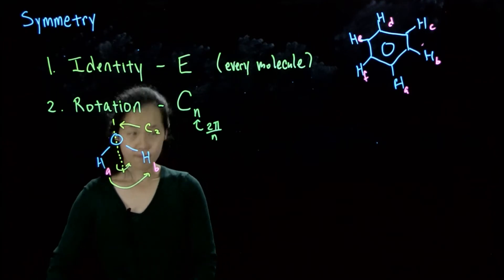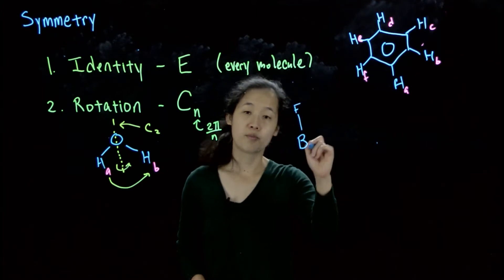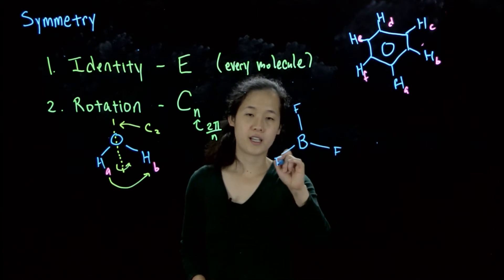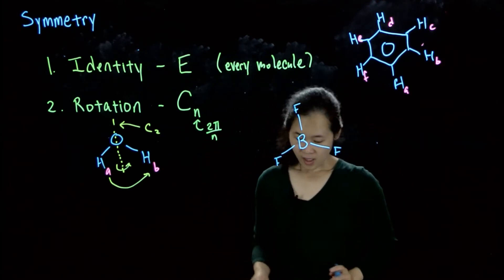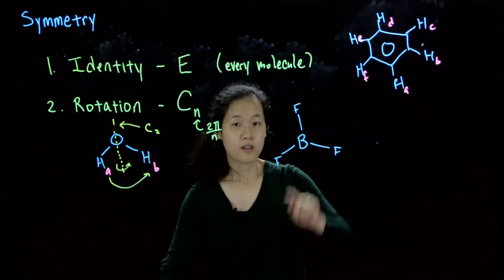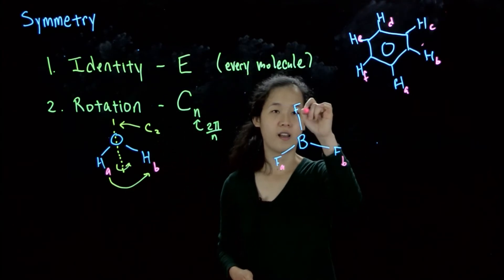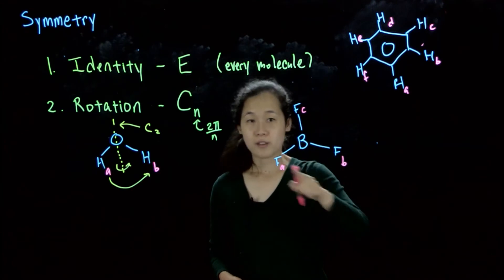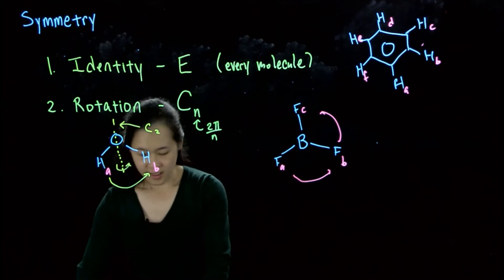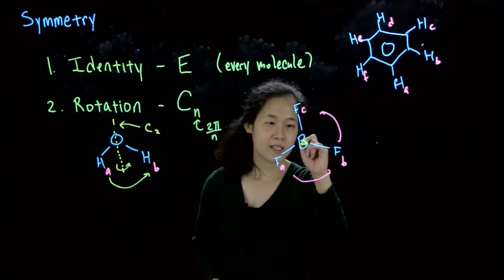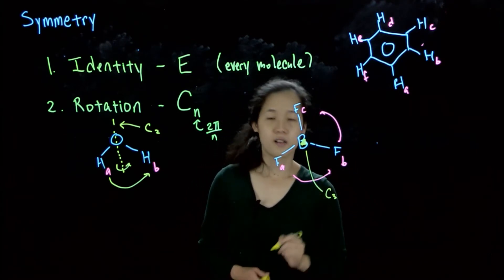If, on the other hand, we take, let's say, boron trifluoride. So boron trifluoride is planar. So we're looking again down this, so this is the planar, so it's in plane to the board right now. So you could imagine rotating it. We have FA, FB, FC. We could rotate by 120 degrees, A to B, B to C, etc. And so I'll denote this as a triangle. So this is the rotational axis into the board. So this is going to be what's called a C3.